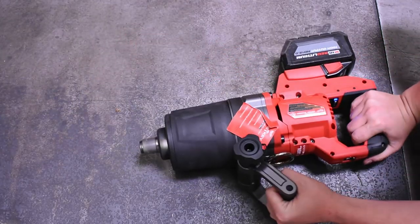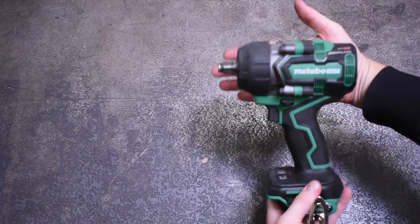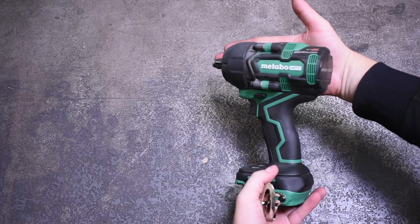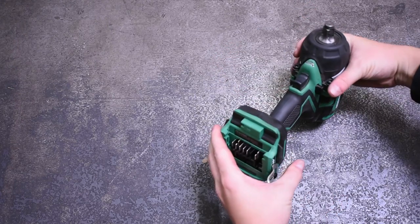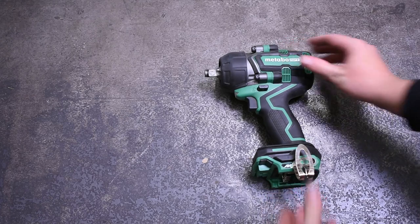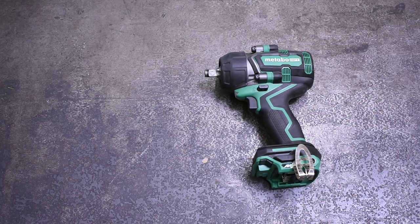We would be none too offended if Milwaukee sort of skimmed their competitors' homework on this one and made their own M36 batteries that were backwards compatible. Until then, if that sort of thing suits your fancy, there's always Metabo HPT. It's a very good tool. Big thanks to Brian at Workshop Addict for going covert ops and not spilling the beans on this one, and thank you for watching.